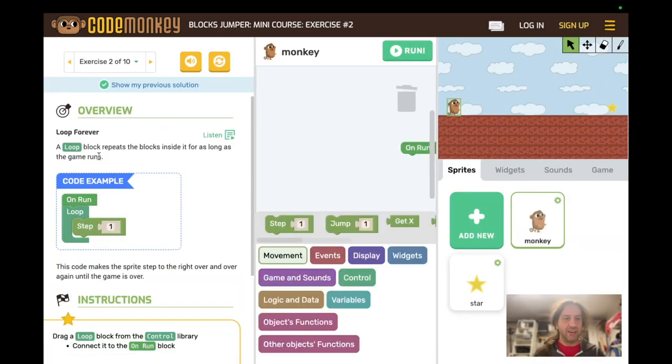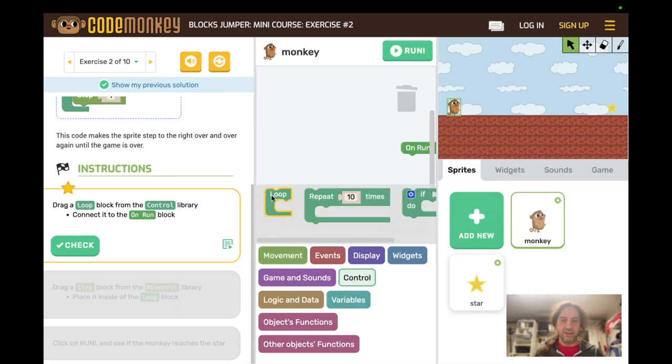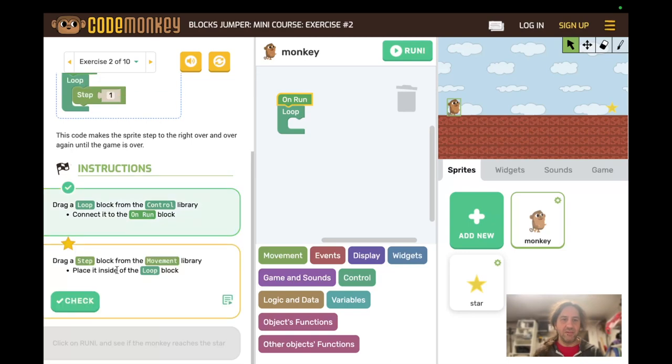Now we're on exercise two of ten. Again they'll read this they'll look at a loop block. They will often gloss over the explanatory text and look at the code example and they'll raise their hand because they don't know how to add a loop block. If they scroll down to the instructions though it tells them drag a loop block from the control library. So we click on the control library and there's the loop block and we drag it to the on run. Now notice the step is gone. It's reset that part of the program from us.